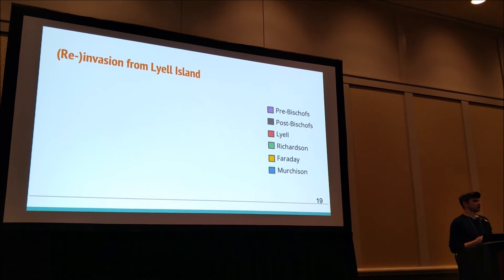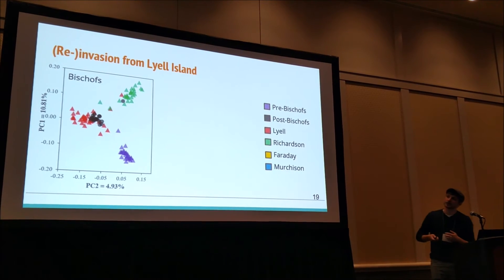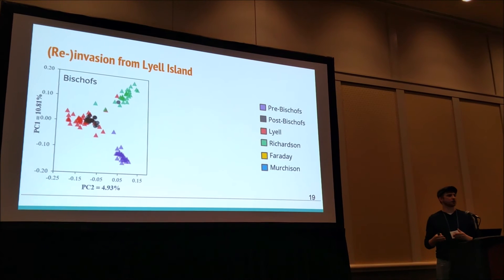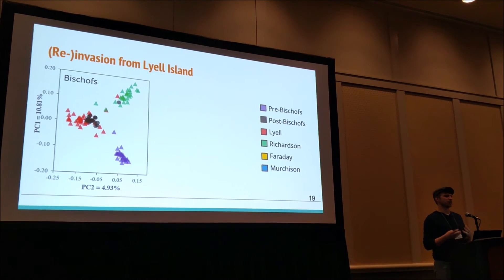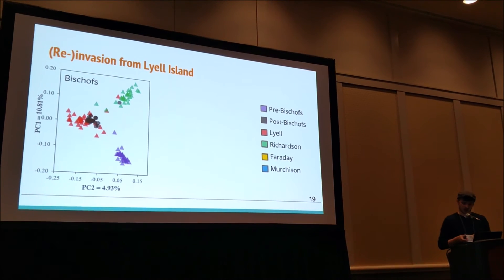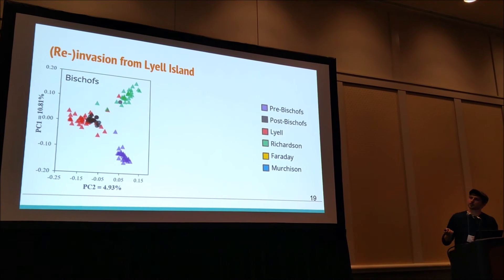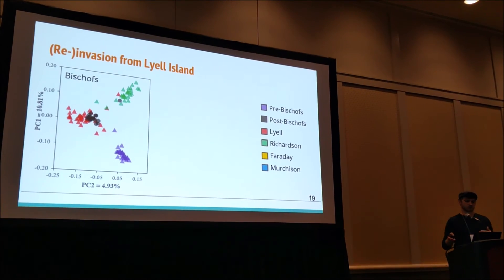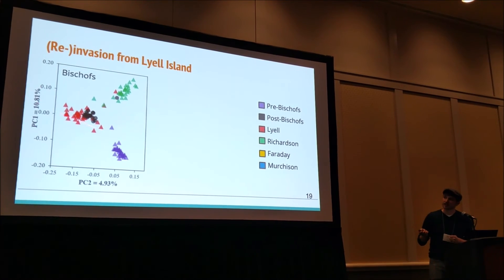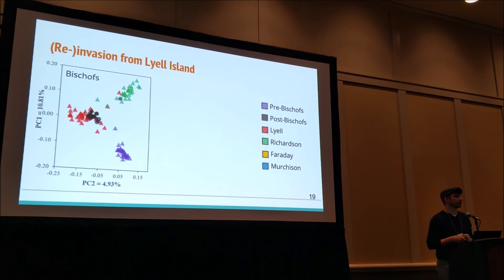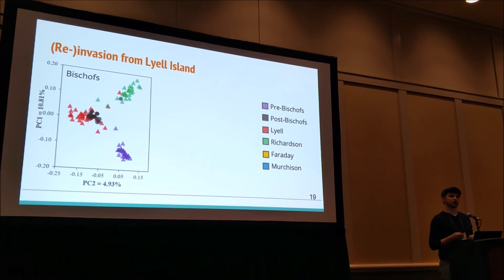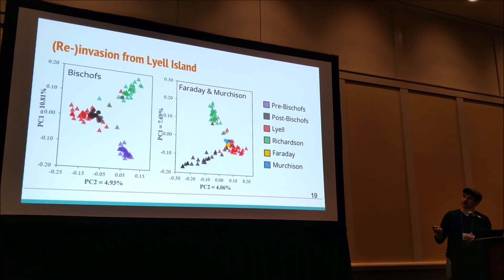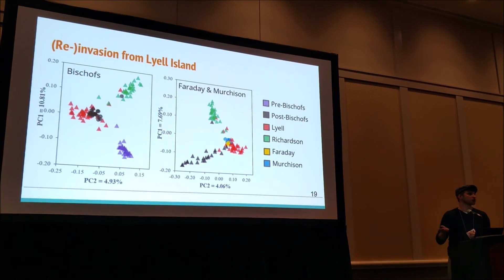What we did find was, in fact, a reinvasion. Looking at a projected principal component analysis, we first defined the parameter space using just the reference samples, shown as triangles, and then projected our unknown samples, shown as black circles, to see which population they most closely clustered with. We included Lyle and Richardson as potential source populations, and also had samples from before the eradication to determine explicitly if a group had repopulated from survivors. What we see is that the current Bischoff's population does cluster with Lyle Island — strong support for reinvasion and not a group of survivors. Faraday and Murchison, shown in yellow and blue, also cluster with the Lyle Island population, again making Lyle one of the most likely sources of these rats.